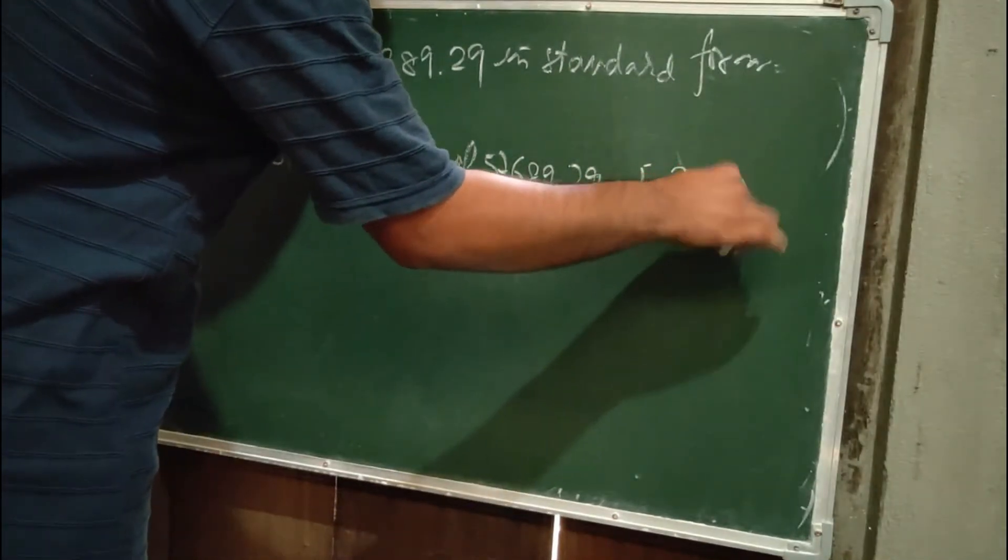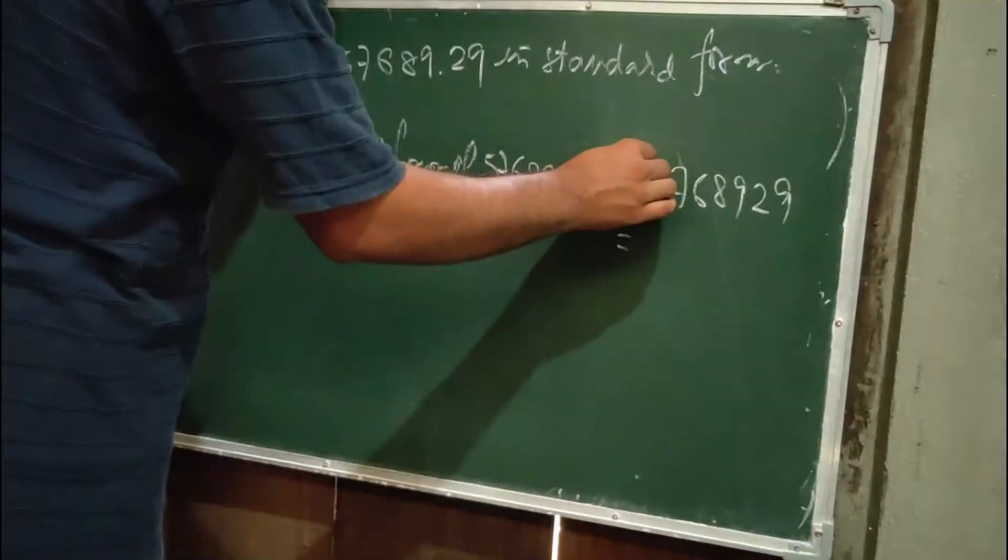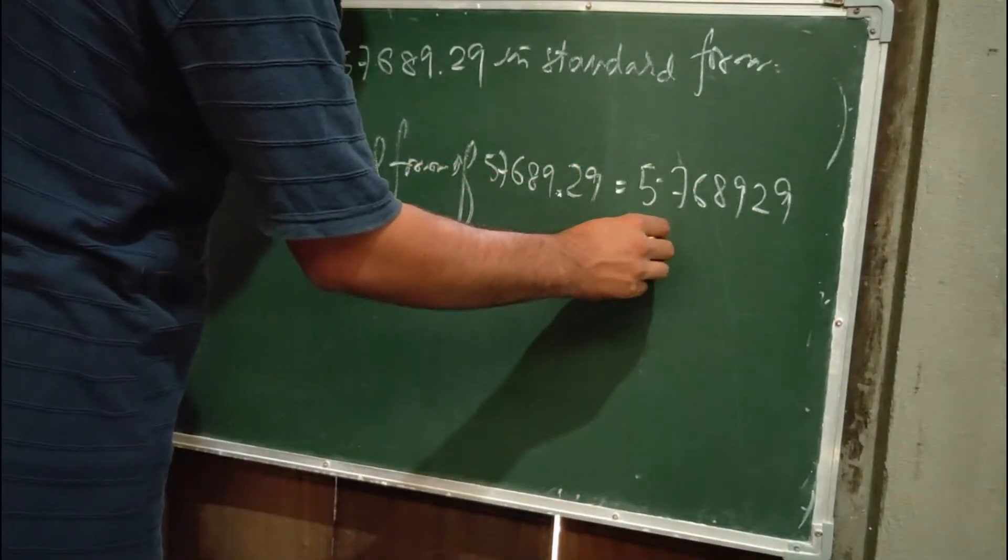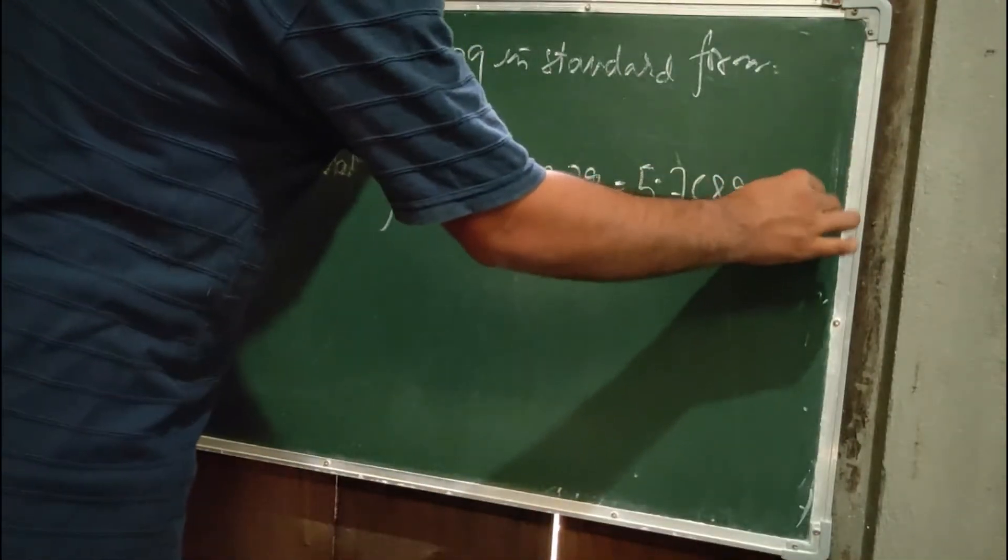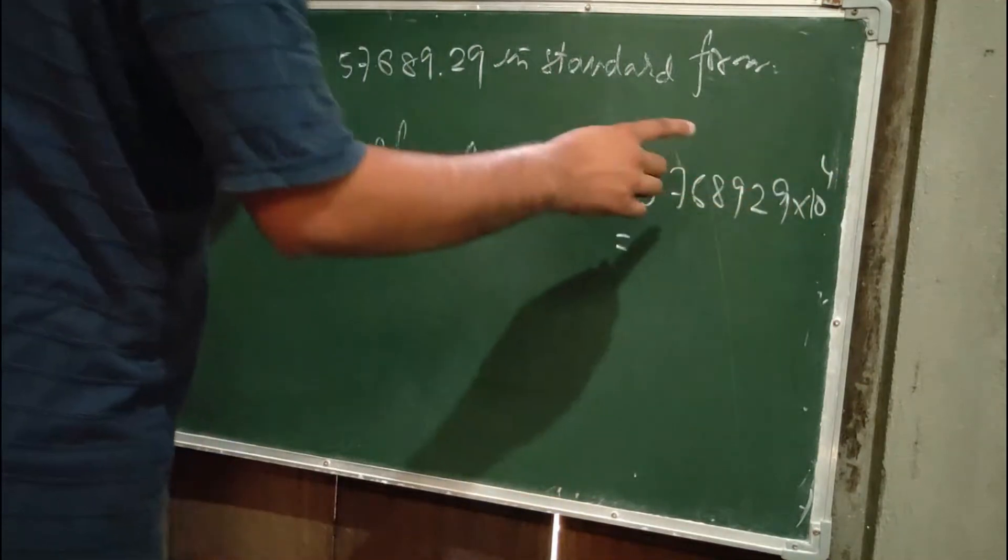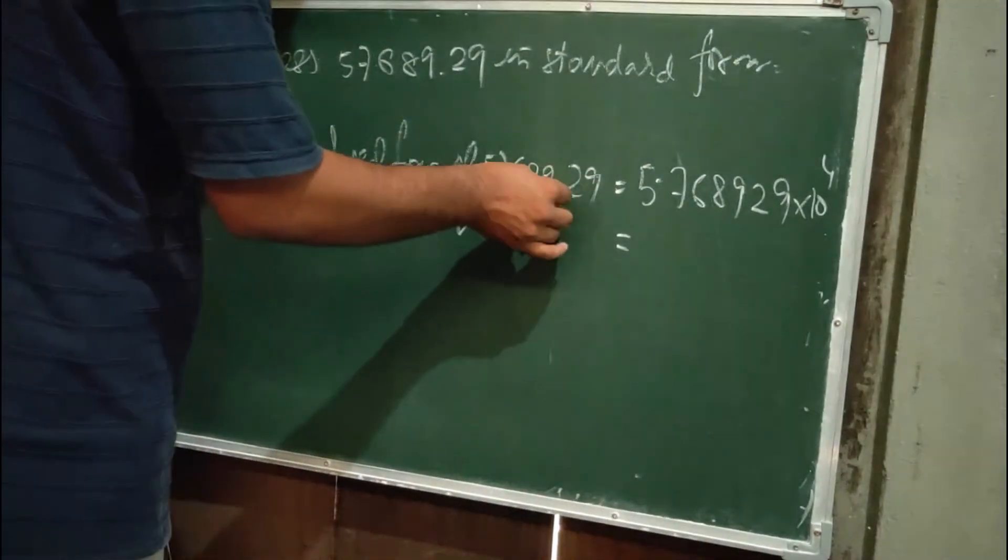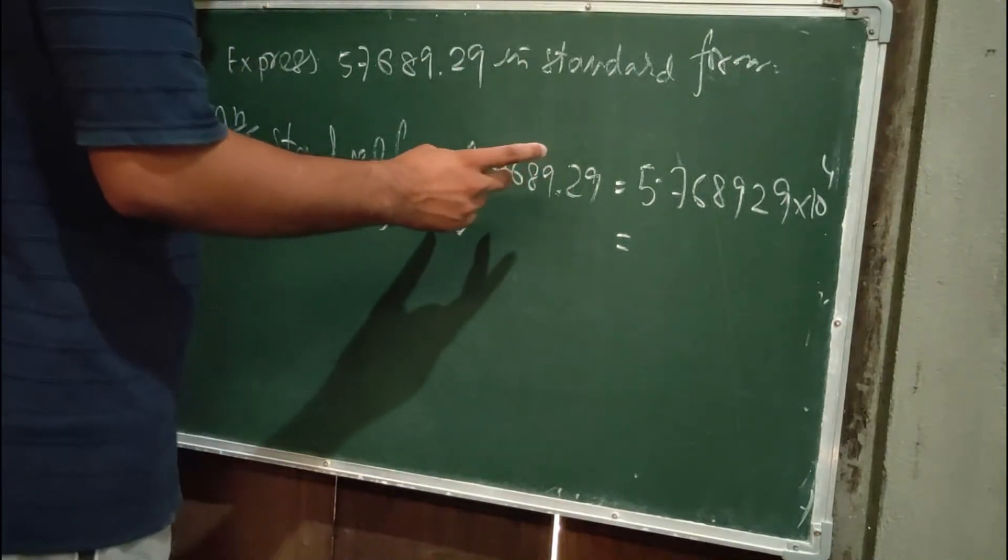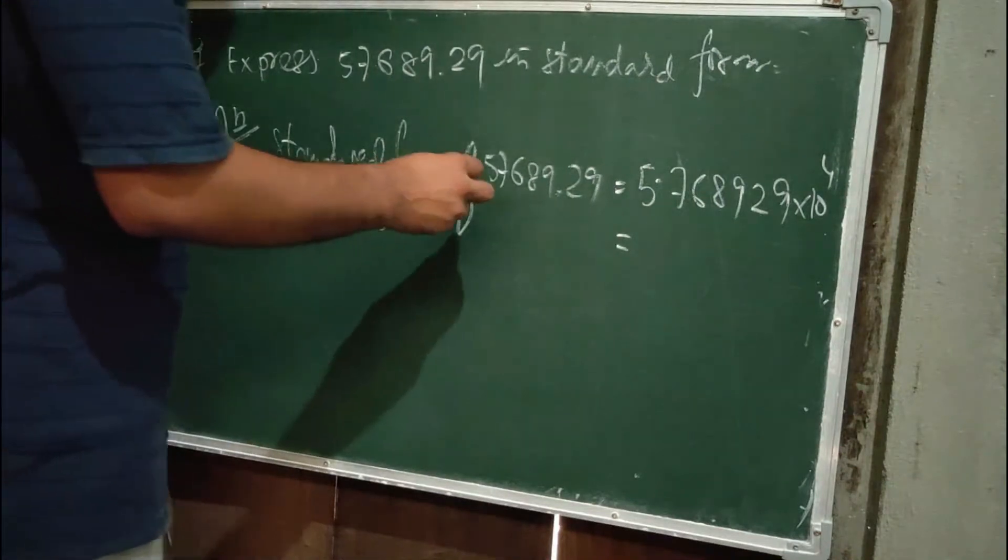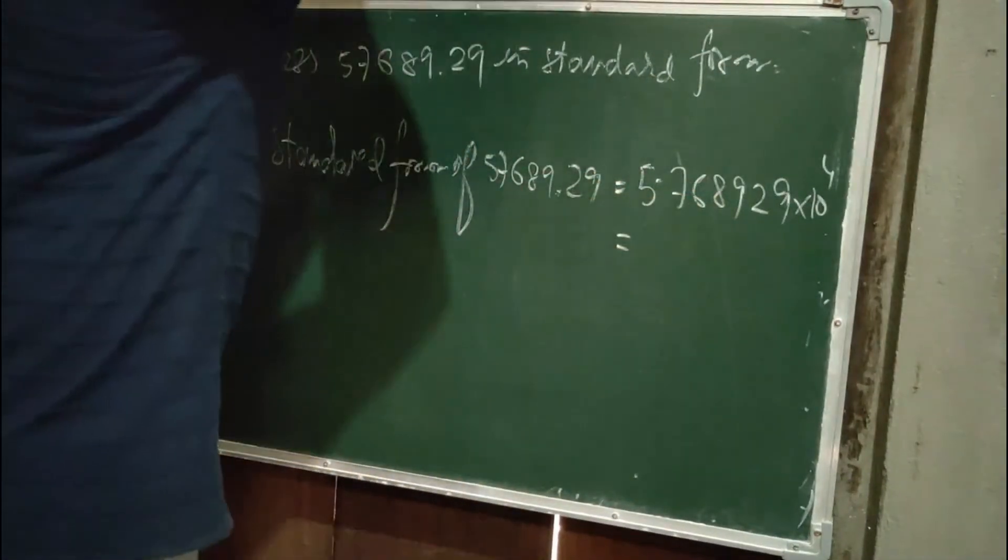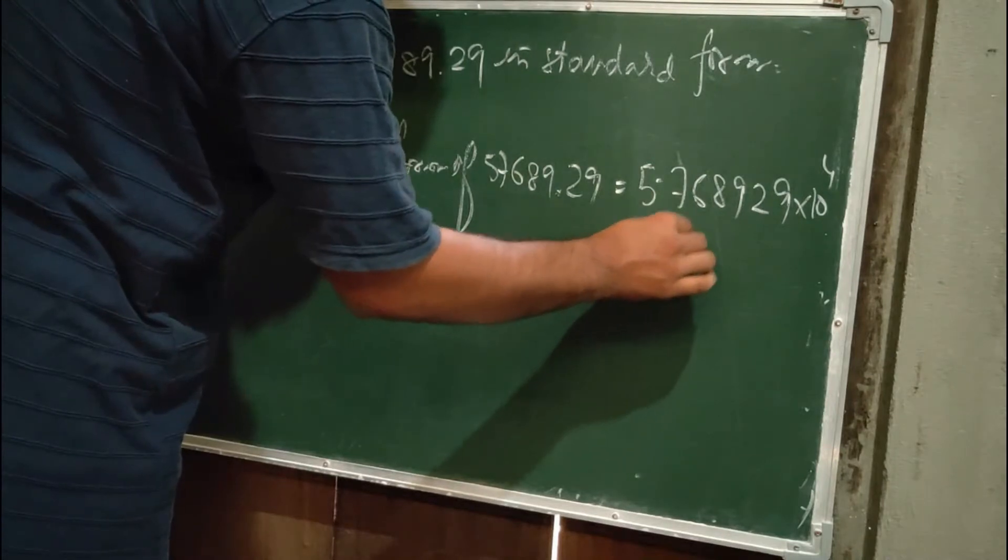We can write this as 5.768929 times 10 to the power 4. The point shifted 4 digits, that's why 10 to the power 4. So we can write 5.77 × 10^4.